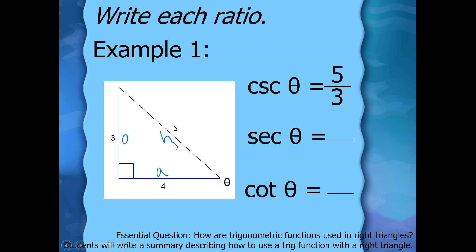Secant is hypotenuse over adjacent. What's on my hypotenuse? Five. What's on my adjacent? Four — so five over four. And then cotangent is adjacent over opposite. Adjacent is four, opposite is three — so four over three. Easy peasy lemon squeezy, right? Let's do another one together.